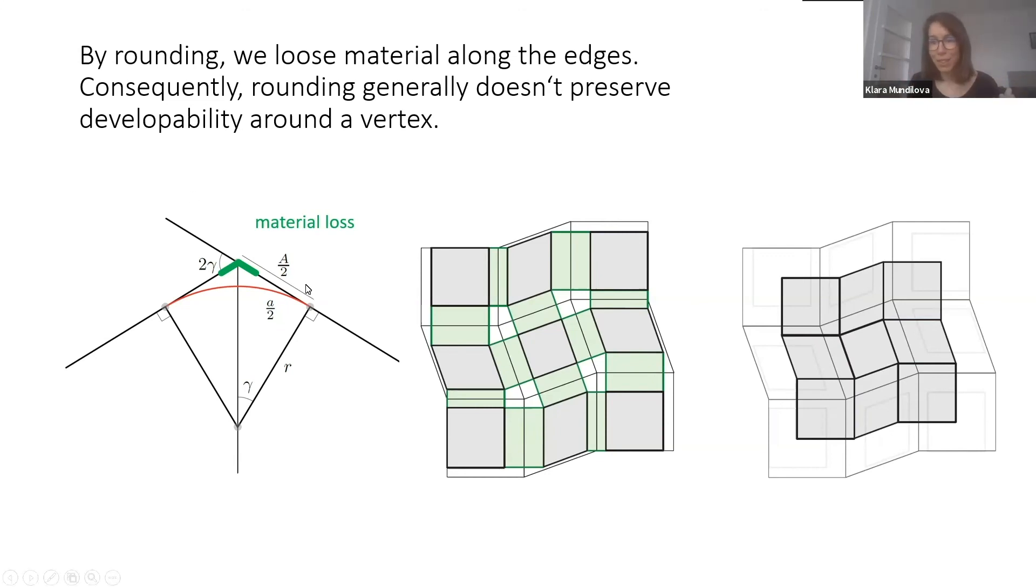Thinking of it differently, when we do this rounding, we lose material perpendicular to the edge. If we walk around the vertex, we want to make sure that by losing this material perpendicularly to the edge, we end up at the same position we started from. This amounts to looking for a positive length reciprocal diagram of the 2D pattern, and these are also called spider webs.